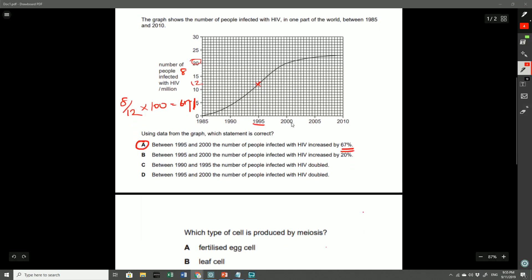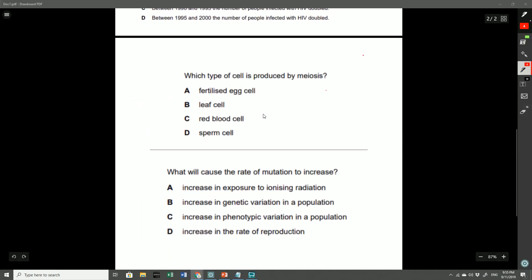Moving on to this fourth question: which type of cell is produced by meiosis? And surprisingly, a lot of people got this wrong. The answer here was D, because the whole point of meiosis is to create haploid cells, or gametes.